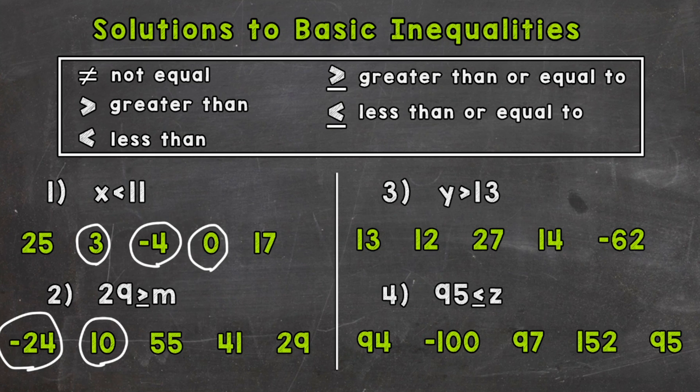Now, this is a greater than or equal to symbol. So 29 would work here. So if we plug 29 in here for m, 29 is greater than or equal to 29. Well, that is true. So 29 is included in the solutions.